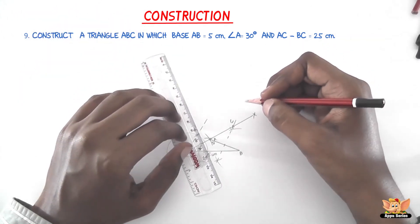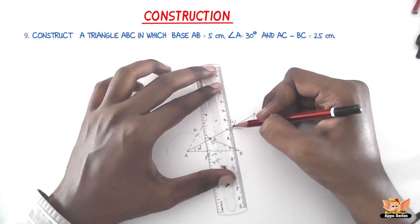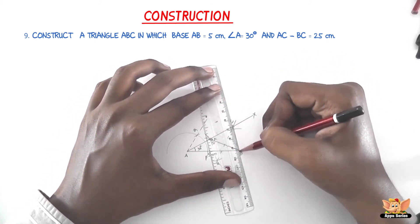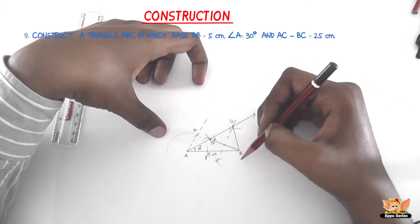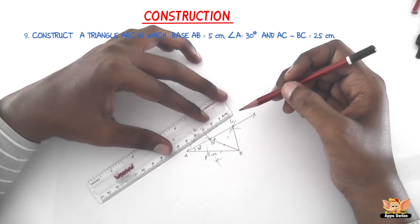The next step, join BC to obtain the required triangle ABC. So here it is. So now we've obtained the triangle ABC such that AC minus BC equals 2.5 cm. Let's check it now.